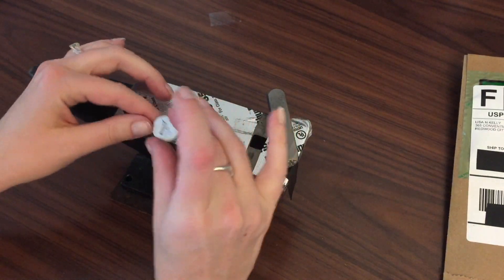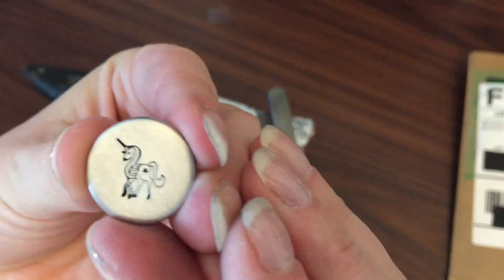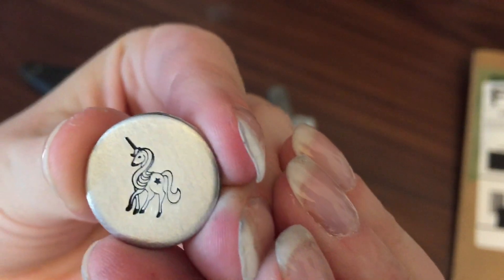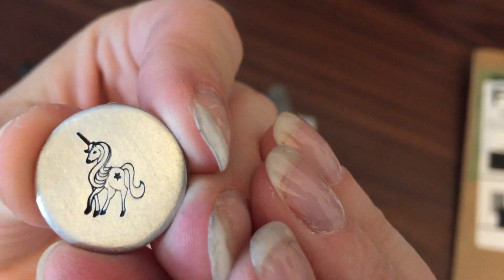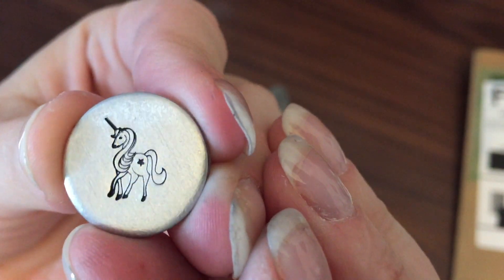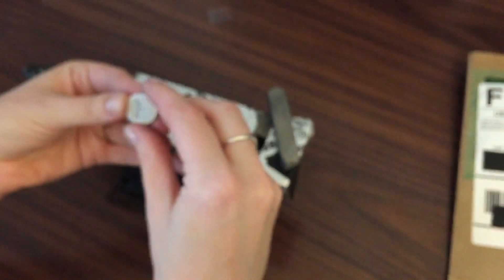So that went a lot better. I just want to show you the detail on this. I love her little mane and a little star on her back end there. Super cute. Good stamp. I'm excited about this one.